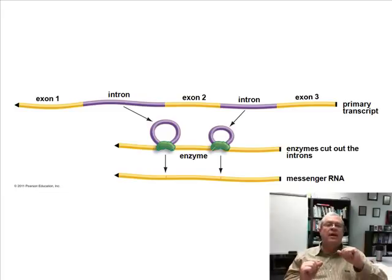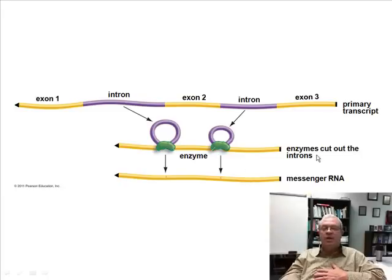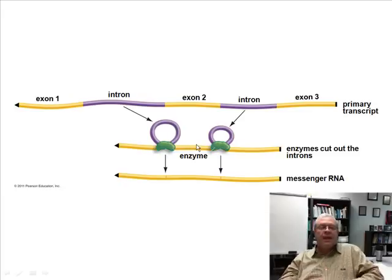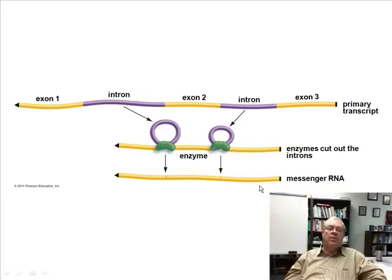They are not coding parts of the RNA molecule or of the original gene. And so what happens before this actually is a messenger RNA molecule? Enzymes cut out the introns and join the exons. And so here we see the introns being cut out and the exons, a little green guy there represents an enzyme. So after the introns are cut out and the exons are spliced together, then what is left is the actual messenger RNA molecule.